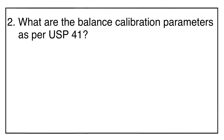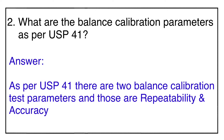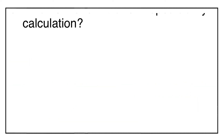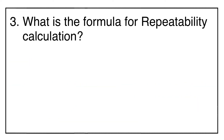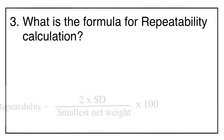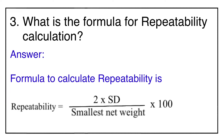Question number two: what are the balance calibration parameters as per USP journal chapter number 41? The answer is there are two balance calibration parameters as per USP journal chapter number 41, and those are repeatability and accuracy.